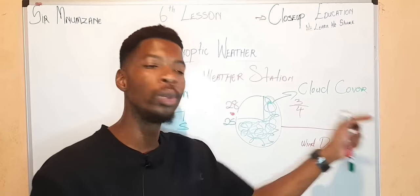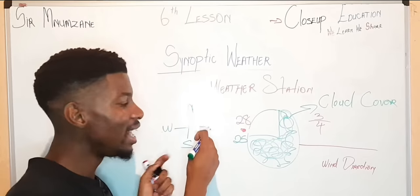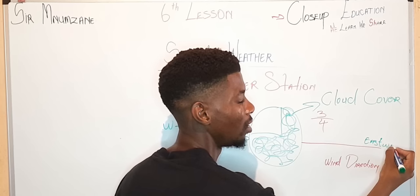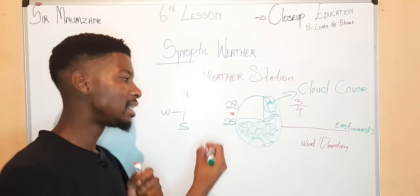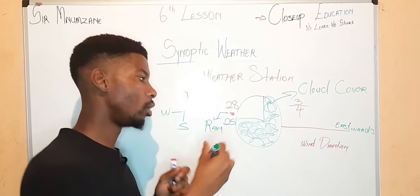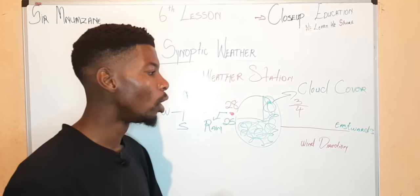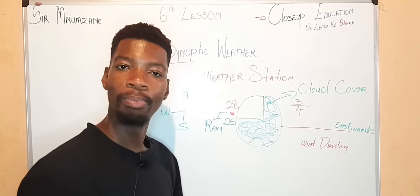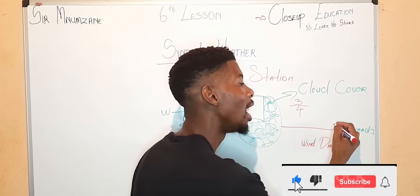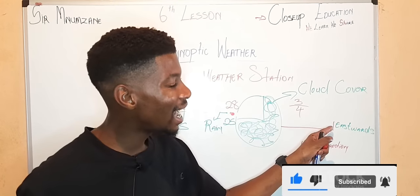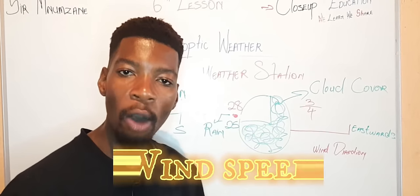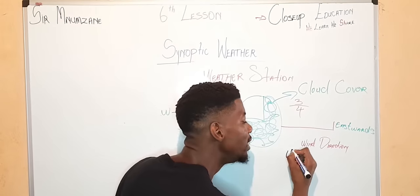Which direction is this wind taking? Obviously, eastwards. So this is eastwards. And we know this is what we call rain. Then we continue. At the last part of our wind direction line, we usually have our wind speed. That line represents the wind speed. How fast is the wind moving? Wind speed.